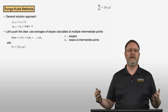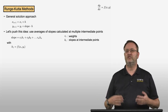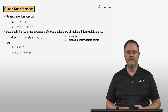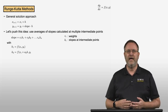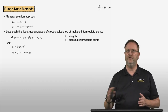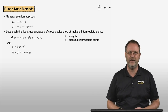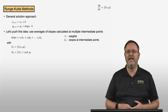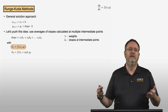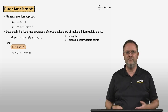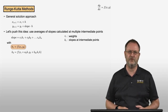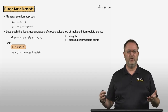The slopes are calculated at points starting with the first slope at the known current point x_i, y_i. Then we calculate a second slope at some intermediate location at x_i plus a_2 times h, where a_2 is the fraction within the interval from x_i to x_i+1. We also evaluate the right-hand side function f at an intermediate y value: y_i plus b_21 times the slope k_1 times the step size h, giving us our second intermediate slope k_2.